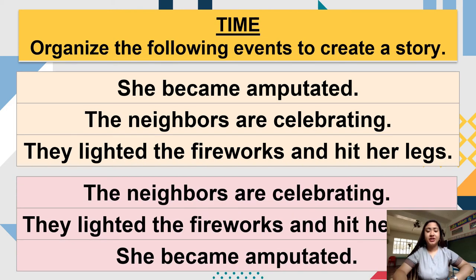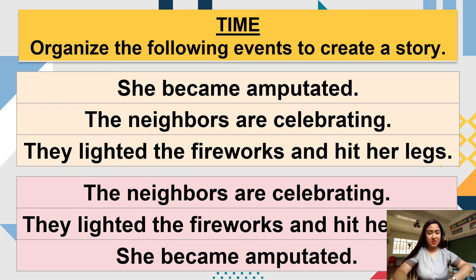Here are the correct answers. The first event is the neighbors are celebrating. Then, they lighted the fireworks and hit her legs. And lastly, she became amputated. Were you able to organize the events and create a story? Type in yes or no in our comment section.